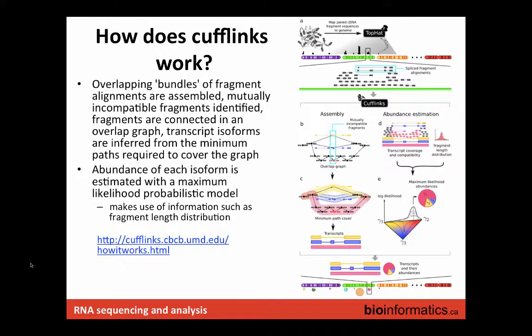Cufflinks is not just trying to account for the difference in library size and gene sizes — those are incorporated — but it's also trying to deal with things like the uncertainty of mapping, where you have a read that could apply equally well to different isoforms. It's trying to figure out a good estimate of all the different isoforms for a gene locus, despite the uncertainty about where each read maps. Some reads clearly belong to a specific isoform because only that isoform has that exon or junction.